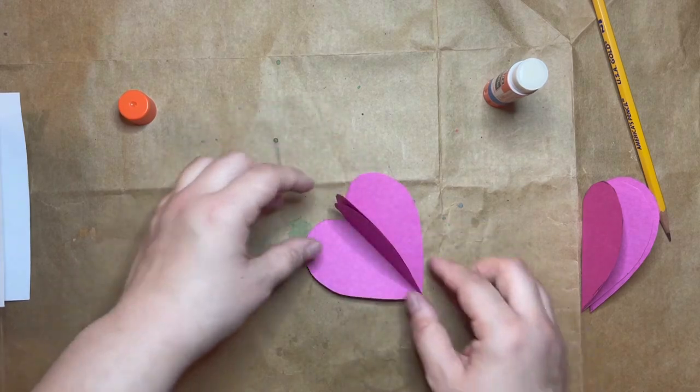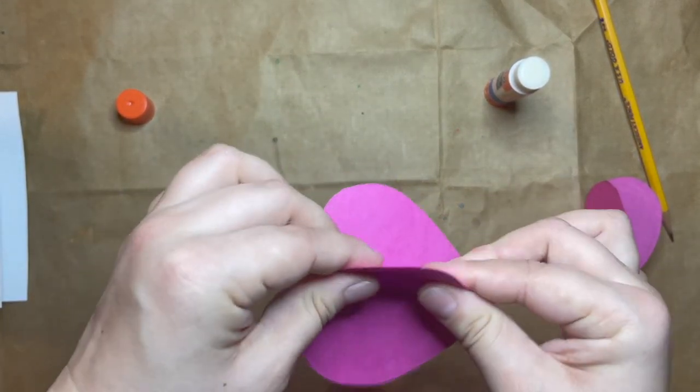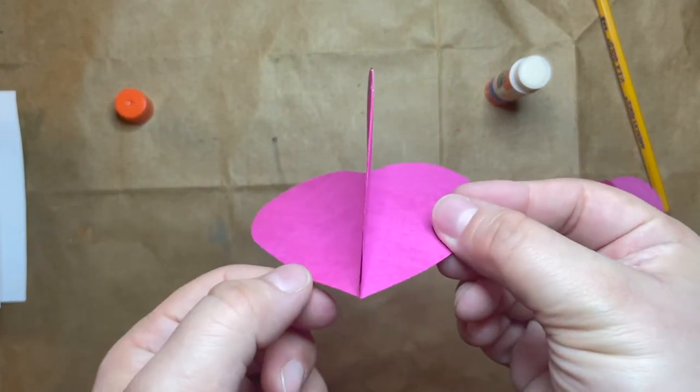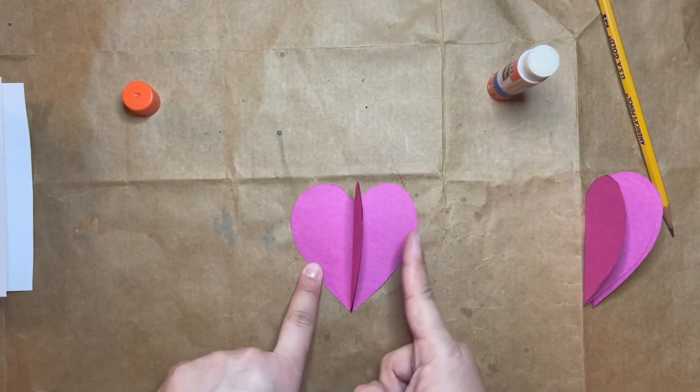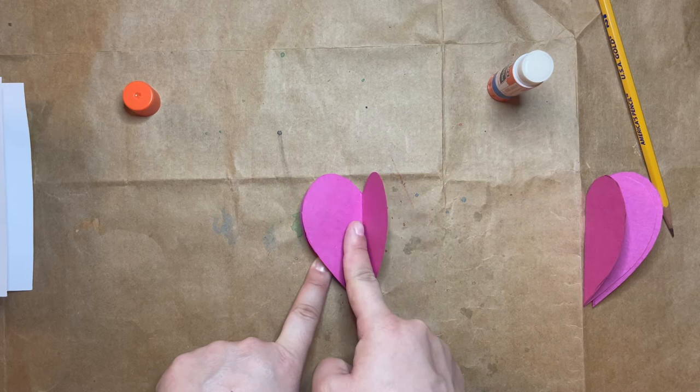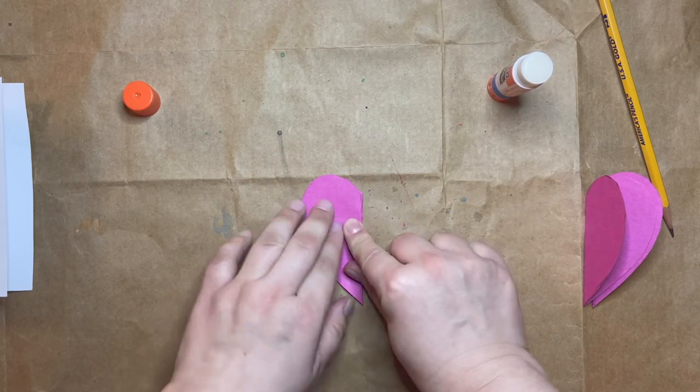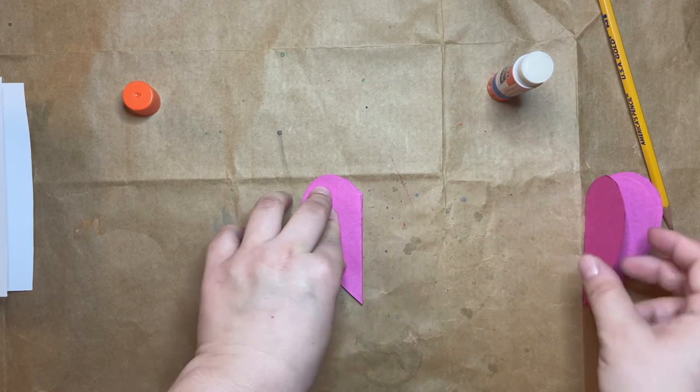Once you get them kind of stuck, you can move them around a little bit and press. Do you see how now I kind of have a 3D shape? That's a heart. So what I'm going to do is fold this 3D part over. Then I'm going to take this part and fold it over here. So now I have a fold edge—there's two fold edges here.